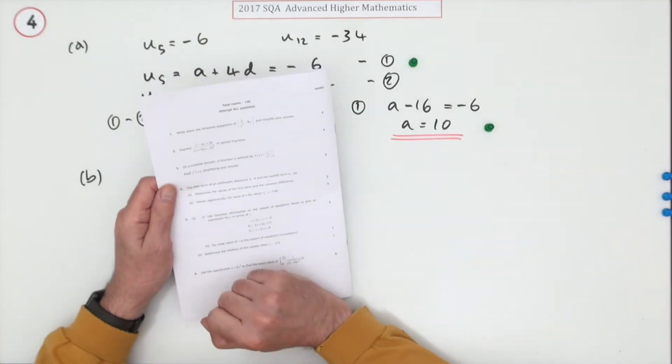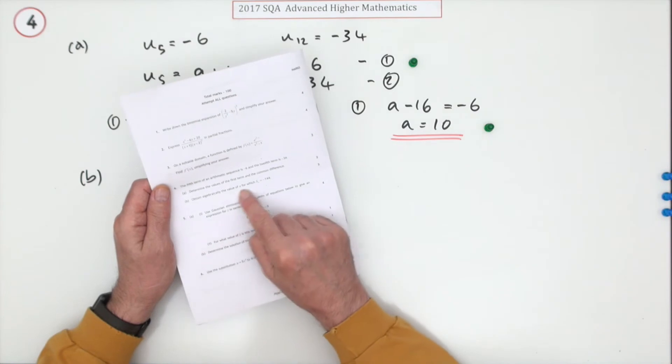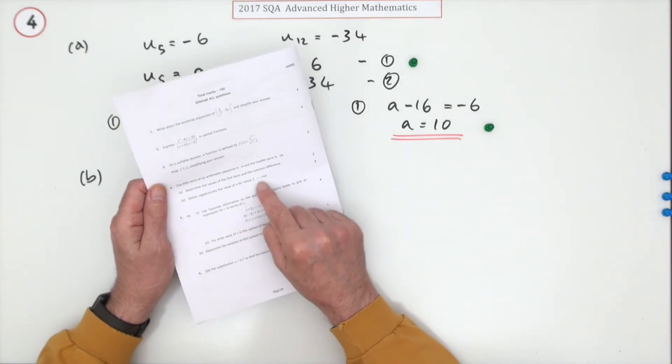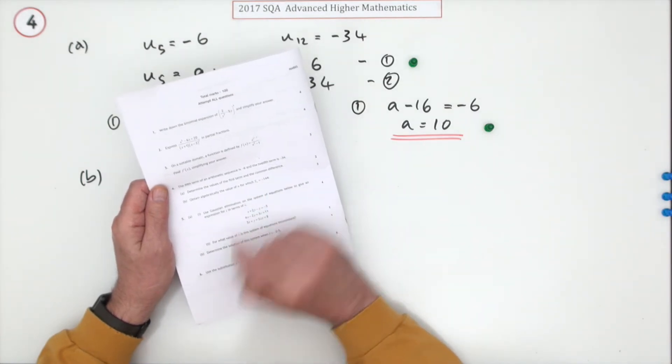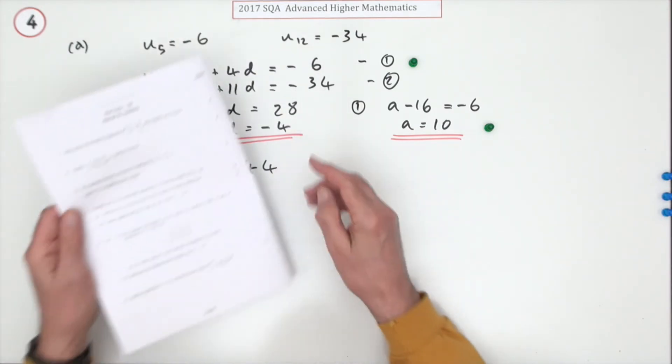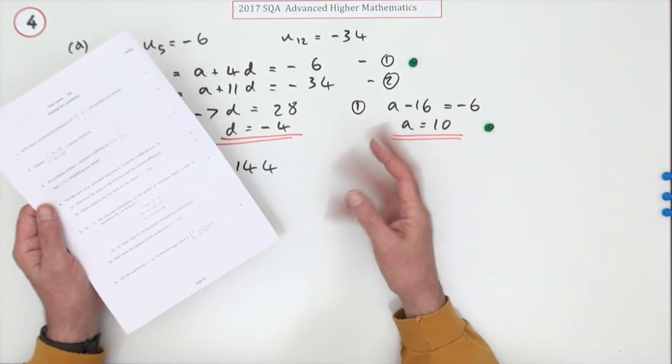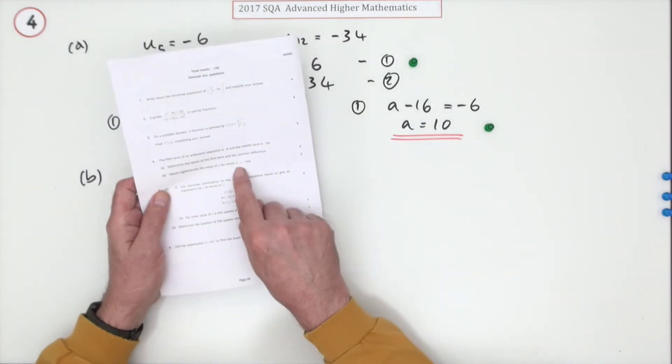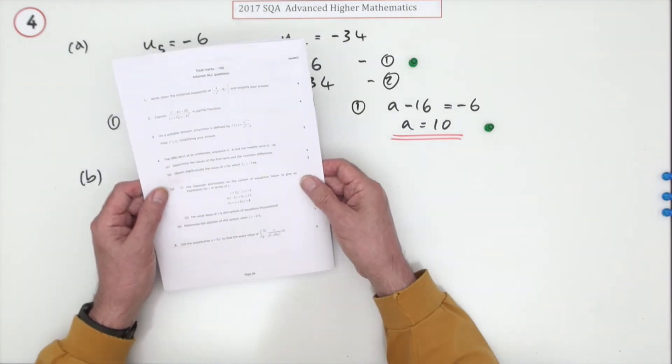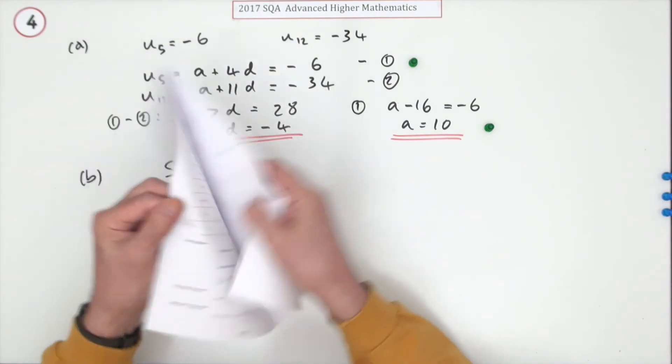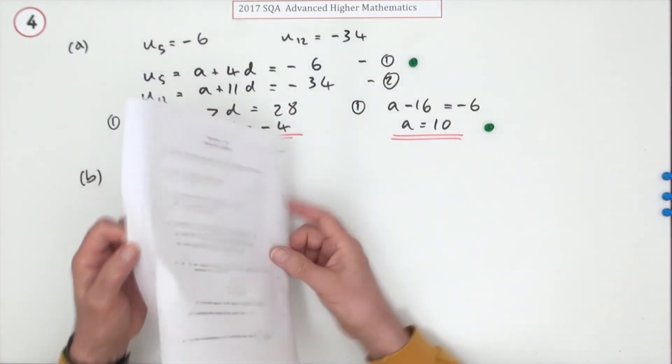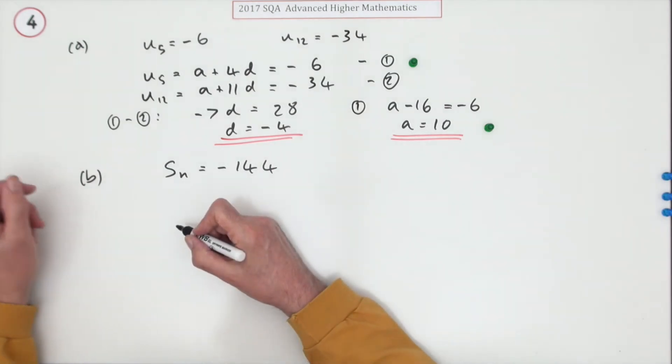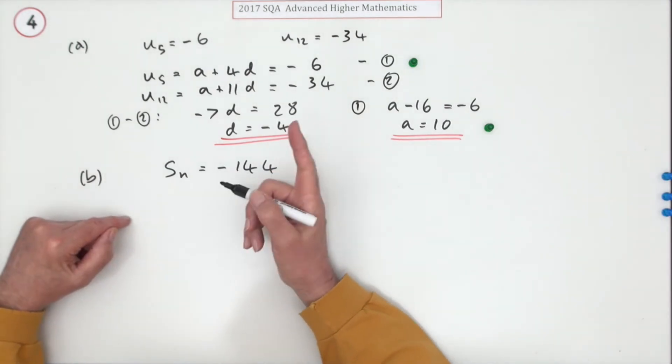Part b then: obtain algebraically the value of n for which s of n equals negative 144. Algebraically means not by trial and error, just by counting it up until you eventually get there. Now s of n, there's a formula for that, it's at the front.